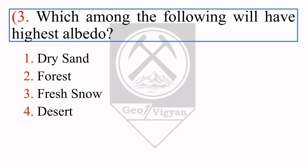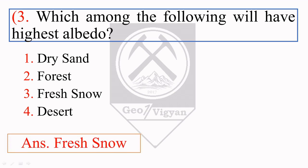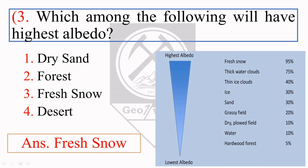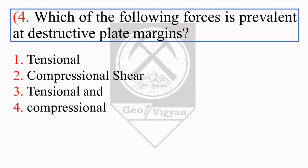The next question is: which among the following will have the highest albedo? First, what is albedo? The total percentage of reflected light from any medium is called albedo, and it depends upon the characteristics of the material. The right answer is fresh snow — as you can see in this chart, fresh snow has an albedo percentage of 95%.